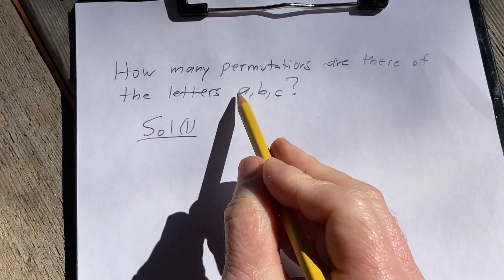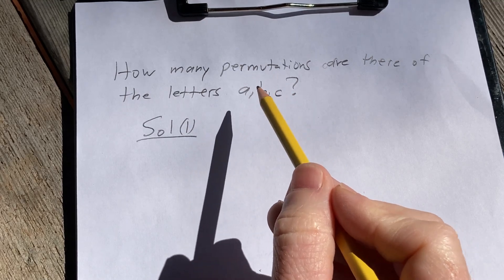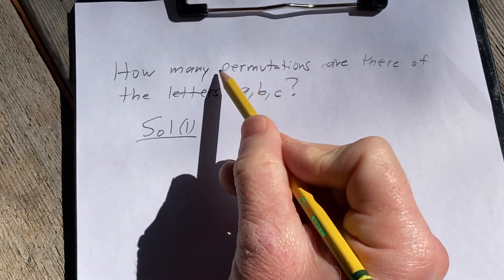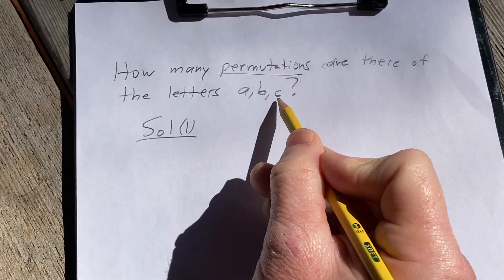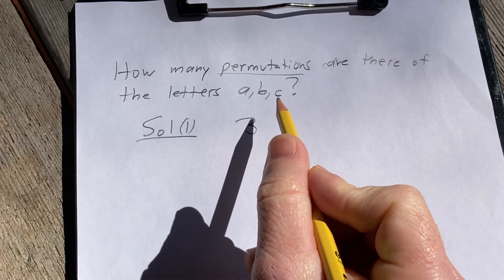So, we're trying to arrange three different letters. An arrangement of distinct objects is called a permutation. So, in this particular case, we have three letters, so there's three ways to choose that first letter. Once we've chosen that first letter, there's two letters left,